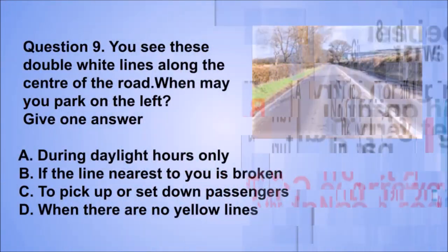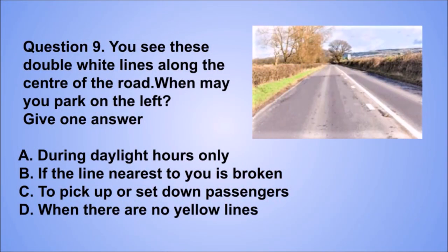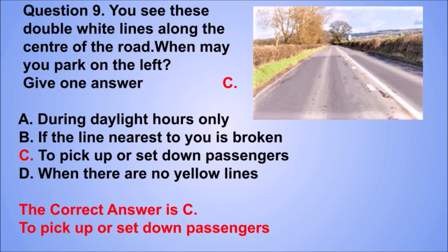Question 9. You see these double white lines along the center of the road. When may you park on the left? Give one answer. A: During daylight hours only. B: If the line nearest to you is broken. C: To pick up or set down passengers. D: When there are no yellow lines. The correct answer is C: To pick up or set down passengers.